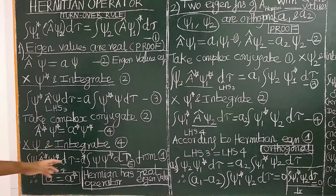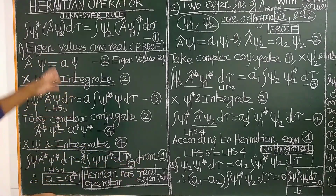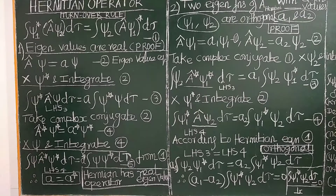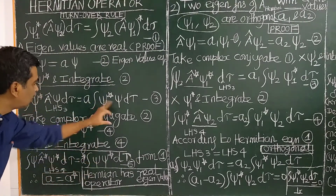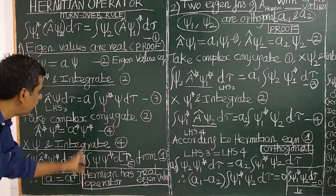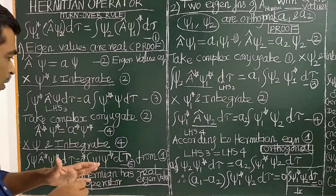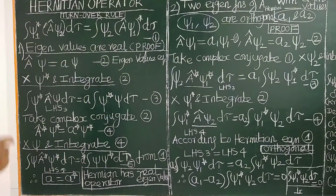From the turnover rule, according to the Hermitian operator equation, the left-hand sides of equations 3 and 5 are equal. Therefore the right-hand sides are equal, and since integral psi psi-star d-tau equals integral psi-star psi d-tau, we get A equals A-star. Therefore, the Hermitian operator has real eigenvalues — the eigenvalues of Hermitian operators are real. We have just proved that.